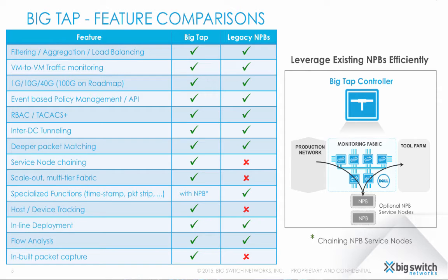Another of BigTap's unique features is service node chaining, with which BigTap enables graceful migration of your data center monitoring from a legacy NPB-based architecture by attaching NPBs as service nodes to the BigTap fabric. This not only provides investment protection, but also increases the efficiency of your expensive NPBs by forwarding only the traffic that requires specialized functions, like time stamping and packet stripping, to them.